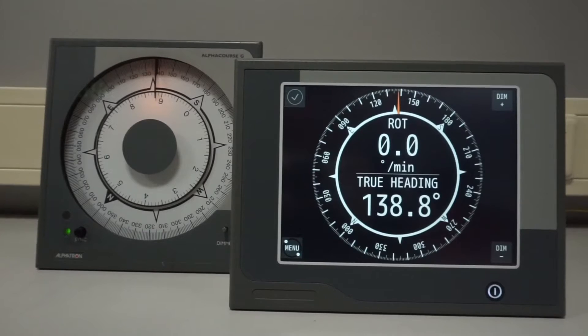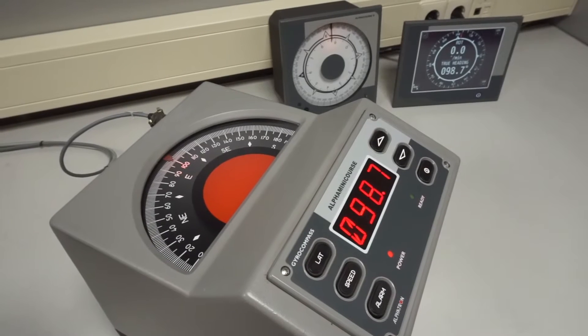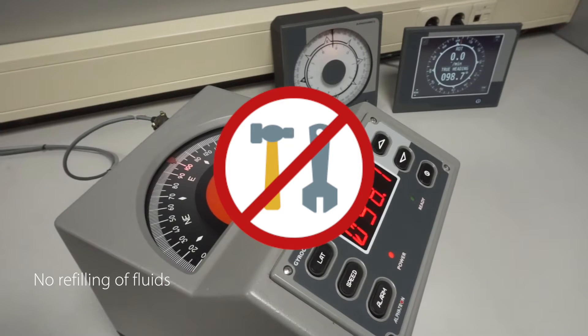The Alpha MiniCourse is used for navigation on seagoing vessels and its biggest advantage is that it's maintenance free. There's no need to refill fluids or clean any components.